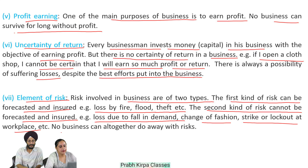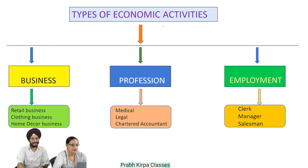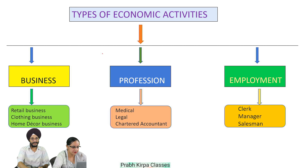Business cannot altogether do away with risk. Types of economic activities: Economic activities are of three types — business, profession, and employment. We will now understand the difference between business, profession, and employment.